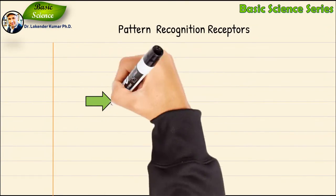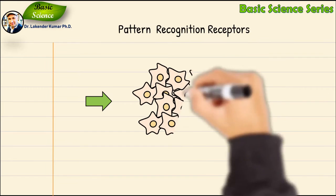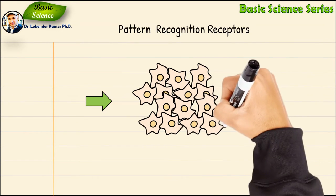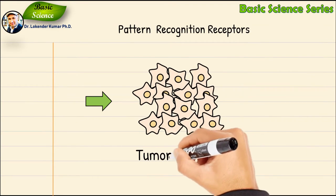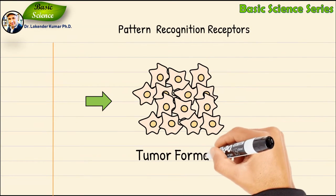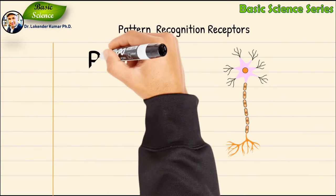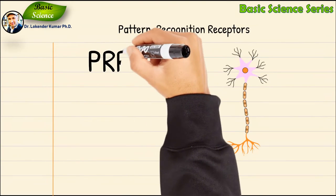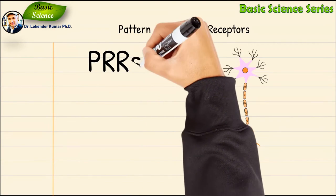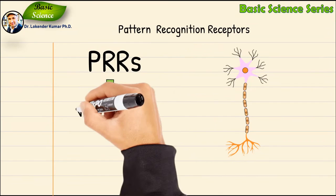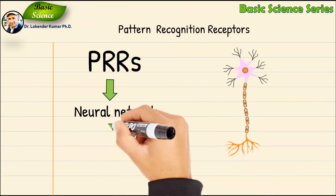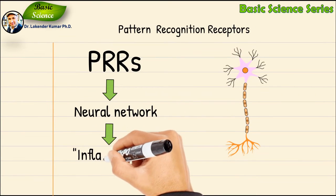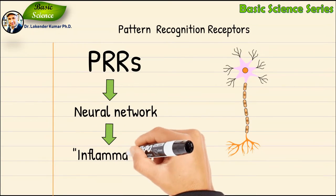Another application of PRRs in human medicine is related to tumor malignancies. PRRs are also tightly connected to the proper function of neural networks and tissues, especially because of their involvement in the process of inflammation.